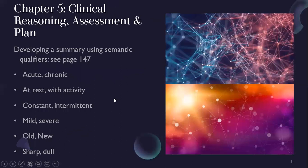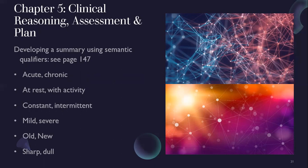Semantic qualifiers — words like 'acute' or 'chronic,' 'at rest' or 'with activity,' 'constant' or 'intermittent,' 'mild' or 'severe' — really change the context of what you're describing. Acute, at-rest, constant, severe chest pain is more concerning than chronic, intermittent, mild chest pain. Using those qualifiers makes your clinical statement more effective.